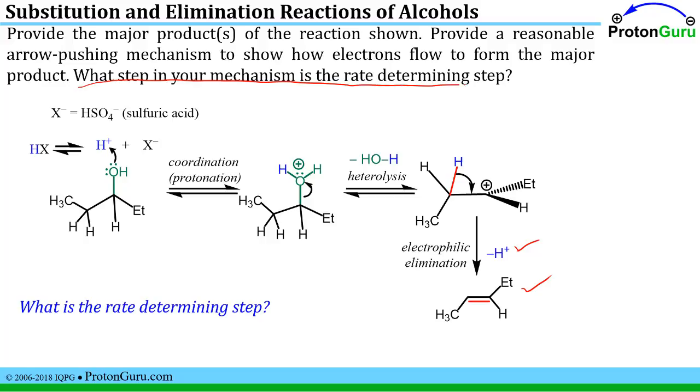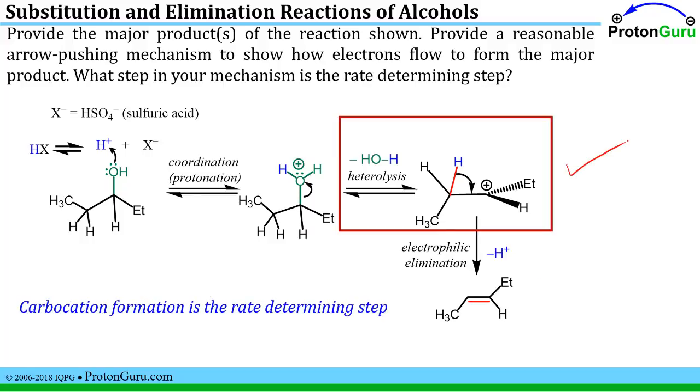Now the last part of this question that's new for this problem is what step in your mechanism is the rate determining step? So if we look back at this we see that one of these steps creates a species where one of the atoms has fewer than an octet of electrons. And that step is right here, the heterolysis to form the carbocation. So the carbocation formation is the rate determining step for this reaction. This is an E1 type reaction.